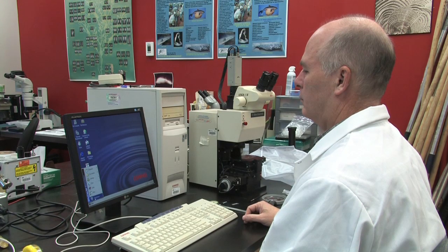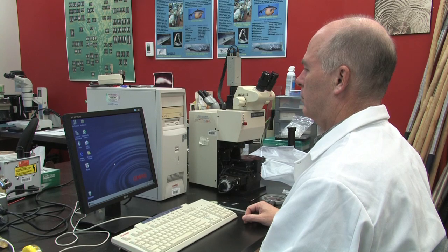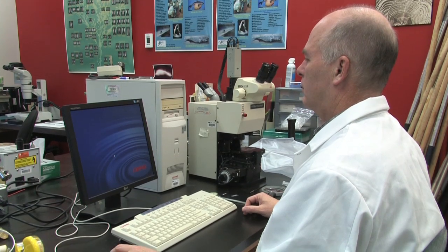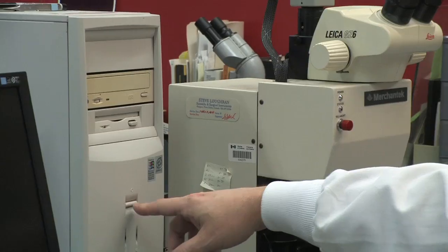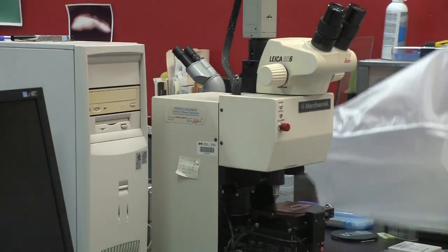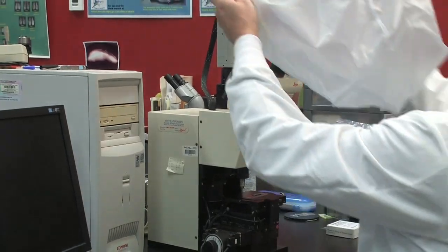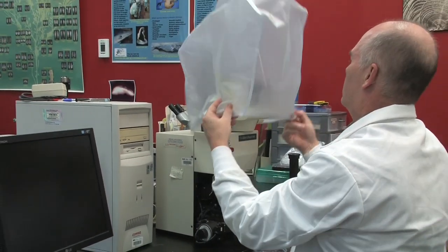When shutting down the system, the computer screen and micromill will have to be turned off manually. The computer will not shut down by itself. Make sure everything is turned off and cover the micromill.